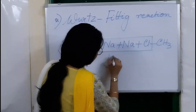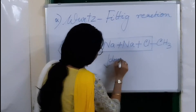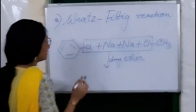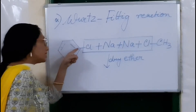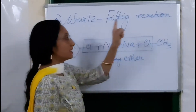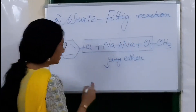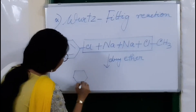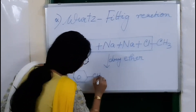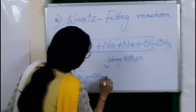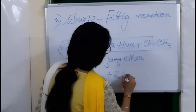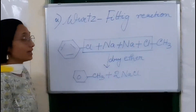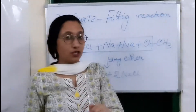So we have chlorobenzene plus sodium plus methyl chloride. NaCl is taken out and the reaction takes place in dry ether. This carbon will get connected to this carbon and we will get toluene plus 2 NaCl.